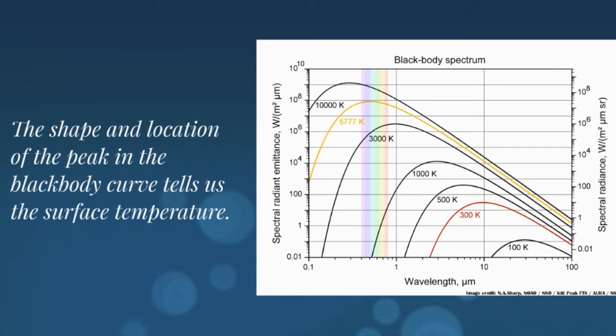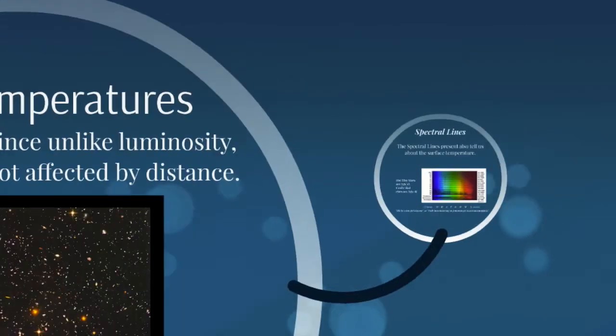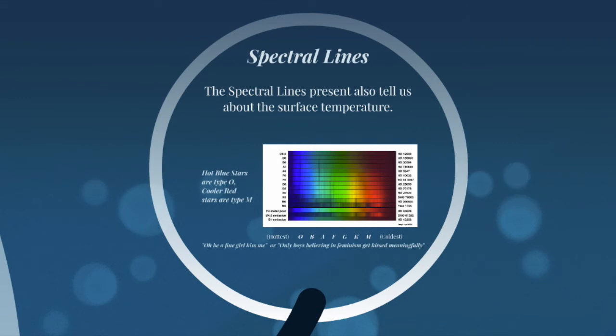But by measuring the spectrum, then, I'm able to deduce the temperature of the surface of the star. Another way we can do this is using spectral lines.